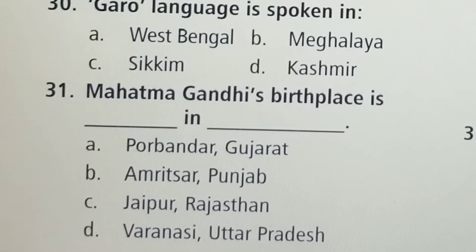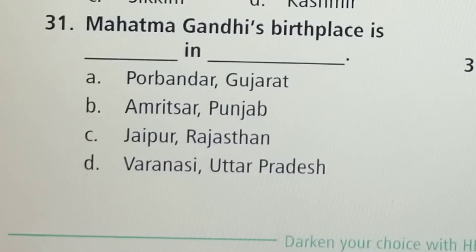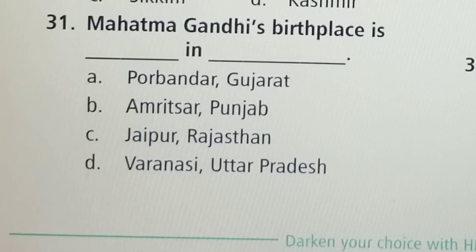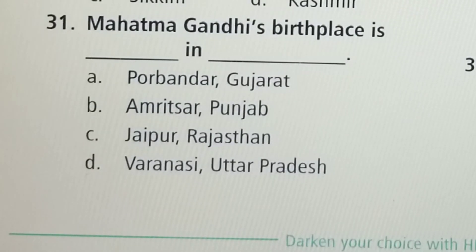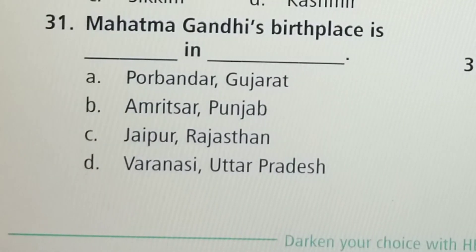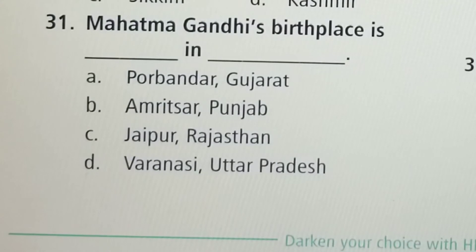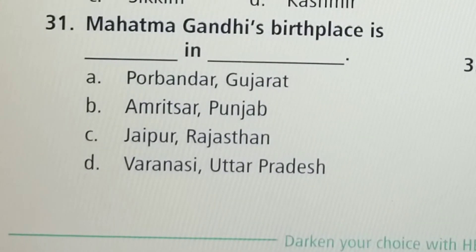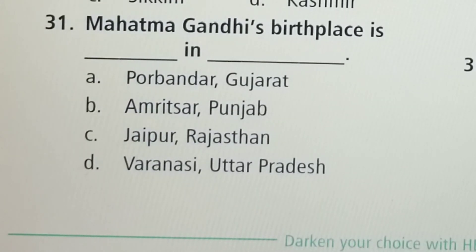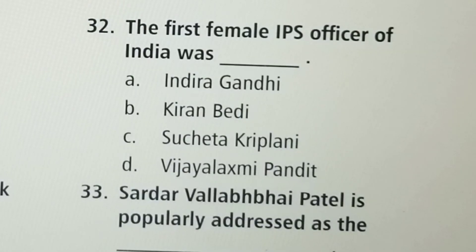Next question: Mahatma Gandhi's birthplace is — Option A: Porbandar, Gujarat; Option B: Amritsar, Punjab; Option C: Jaipur, Rajasthan; Option D: Varanasi, Uttar Pradesh. Option A, Porbandar, Gujarat, is the correct answer.